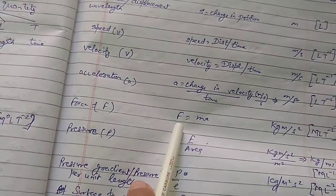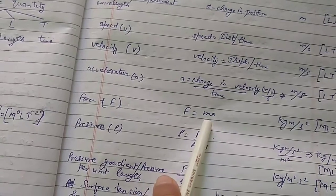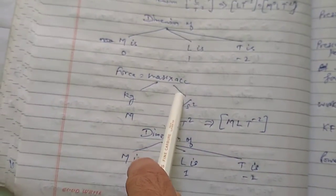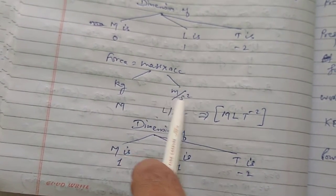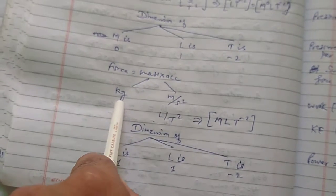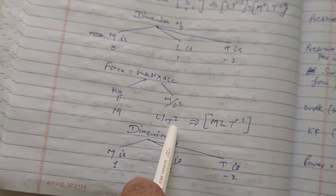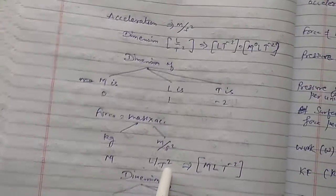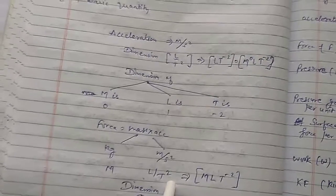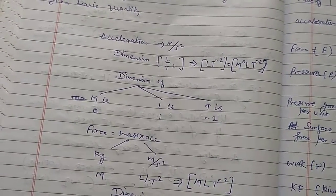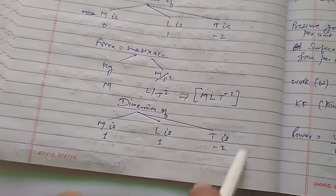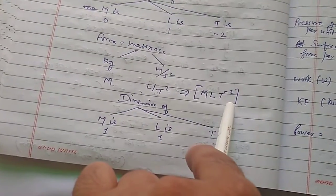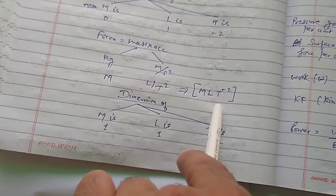Force equals mass into acceleration. The unit of mass is kg, and the unit of acceleration is meter per second square. So the power on mass is 1, dimension of length is 1, and dimension of time is minus 2. We express this as M¹L¹T⁻².